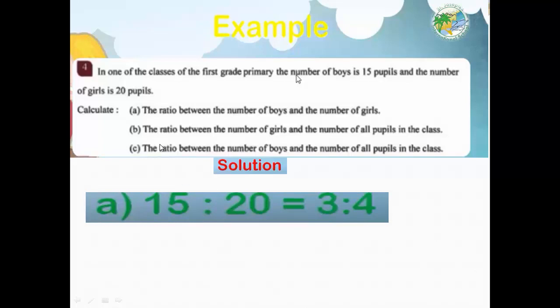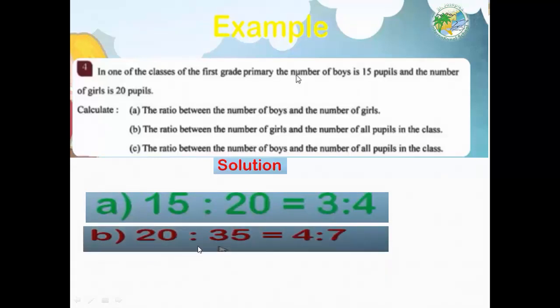Second: the ratio between girls and all people in the class. Girls to all: 20 to 35. The highest common factor is 5. Divide by 5: the ratio equals 4 to 7.